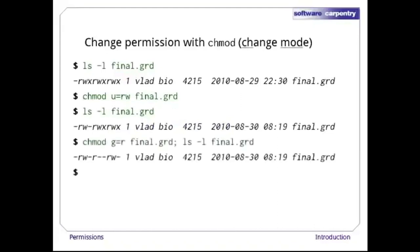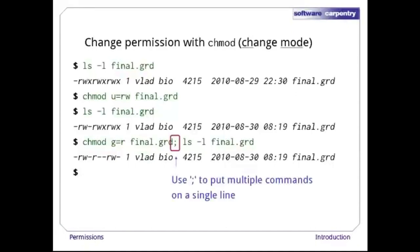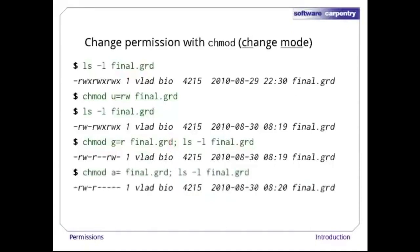Let's run chmod again to give the group read-only permission and then display the results. Notice that we've put two commands on a single line — we can do this as long as we separate them with a semicolon. Finally, let's give all — everyone on the system who isn't the file's owner or in its group — no permissions at all. That's what 'a=' means.